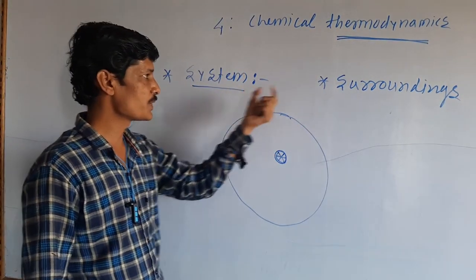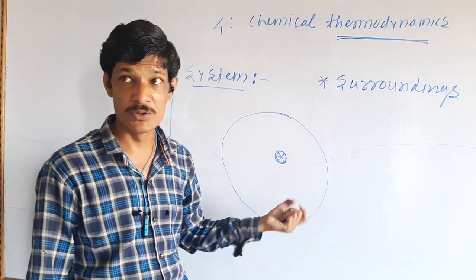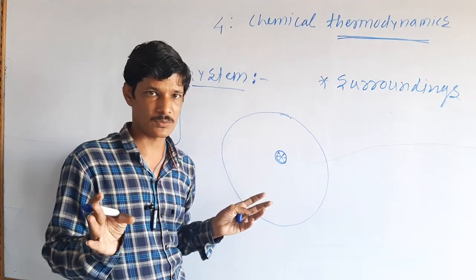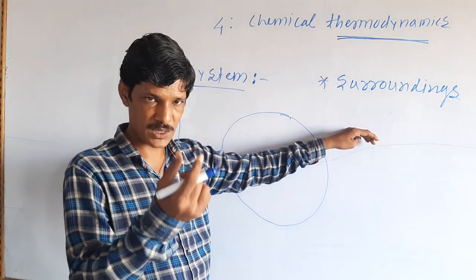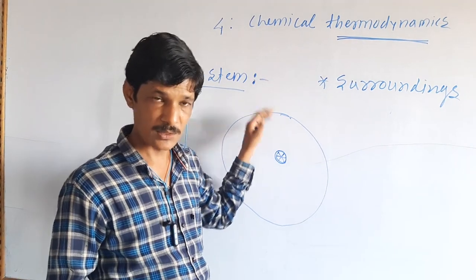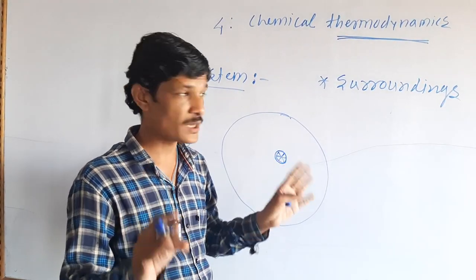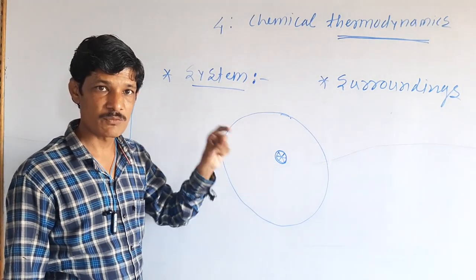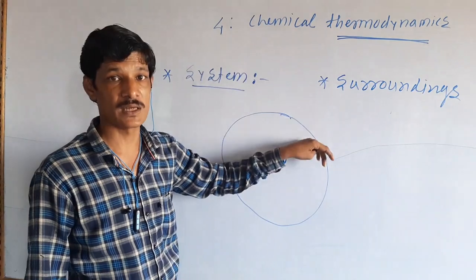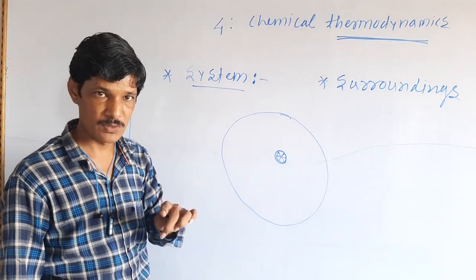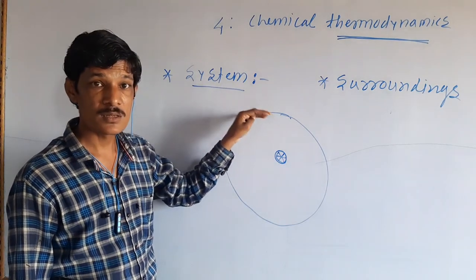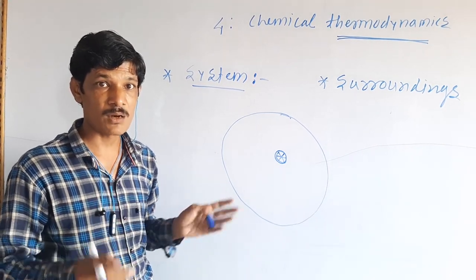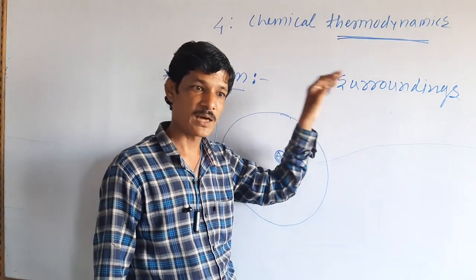The system plus the surroundings equals the universe. We divide the universe into two parts: the system and the surroundings. The part of the universe which is under thermodynamic investigation is called the system. And all other parts outside the system are called the surroundings.